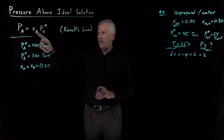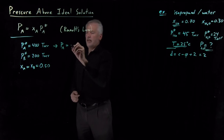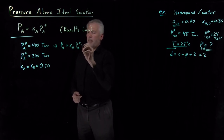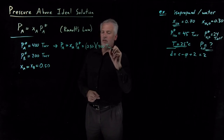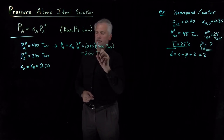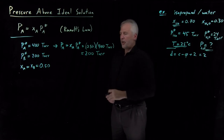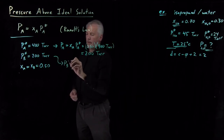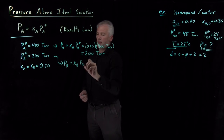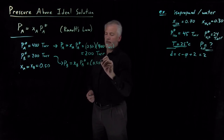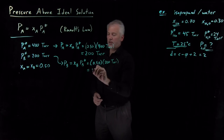That's enough information to calculate the pressures. The partial pressure of A equals its mole fraction times its vapor pressure: 0.5 times 400 torr gives 200 torr. Likewise, the partial pressure of B above that mixture is its mole fraction times its vapor pressure: 0.5 times 200 torr gives 100 torr.